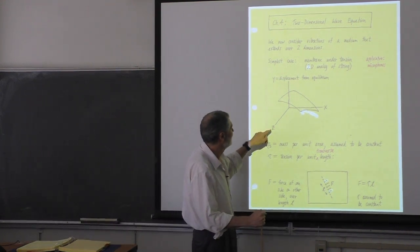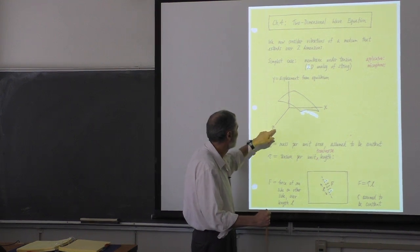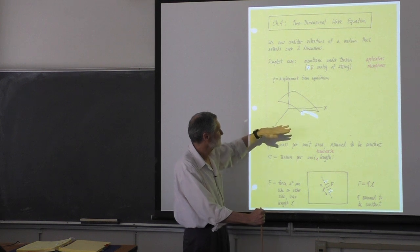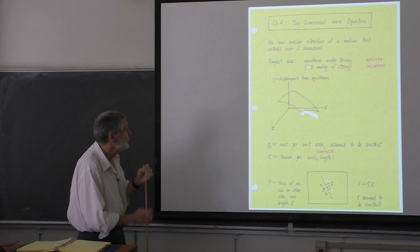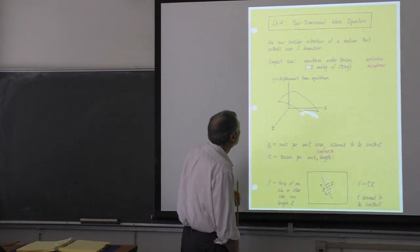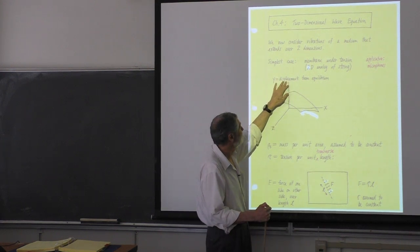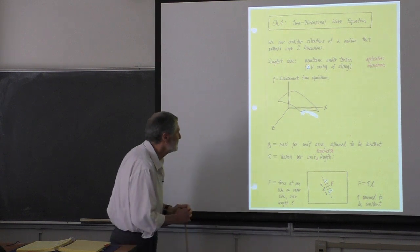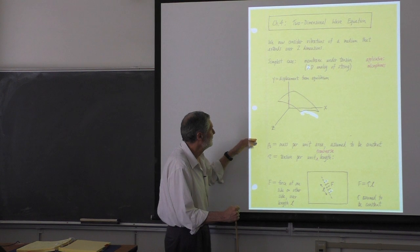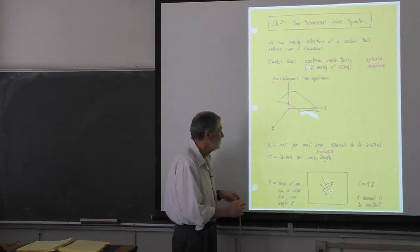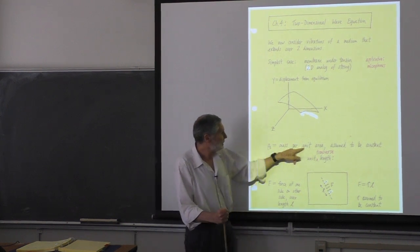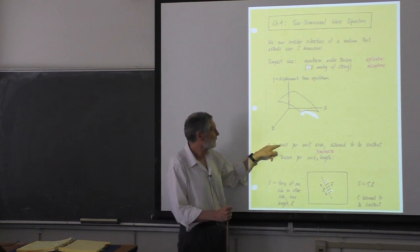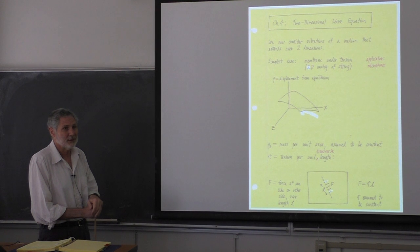We'll take those two dimensions to be the x and z axes. The membrane in equilibrium lies in the x-z plane, and we're going to look at transverse waves on it, assuming it's uniform. The displacement y is a function of x, z, and time — we have two independent spatial variables now. The parameter we need is the mass per unit area, ρ_s, just like we had mass per unit length for a string.